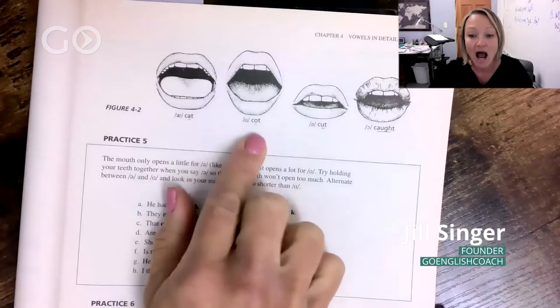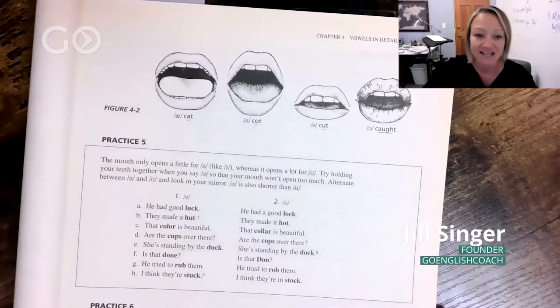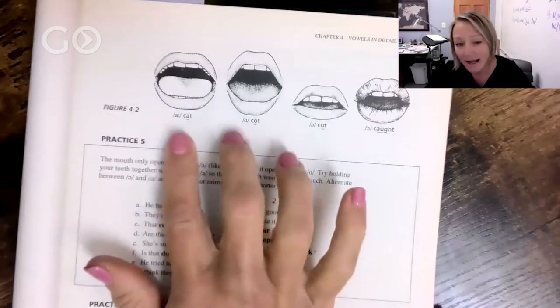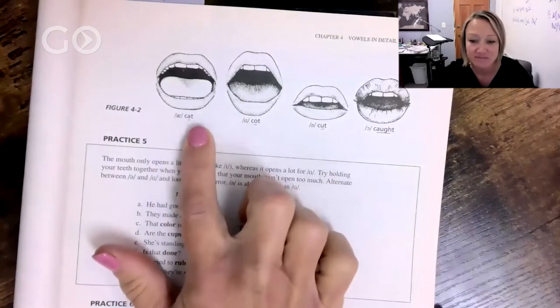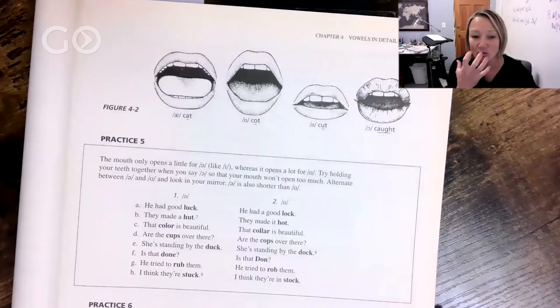Cat, here is 'ah,' caught. So a lot of people confuse these because this sound does not exist in that many other languages. Look at my mouth—my mouth is wide open, kind of like I'm smiling. Ah, ah, and I'm exaggerating of course.